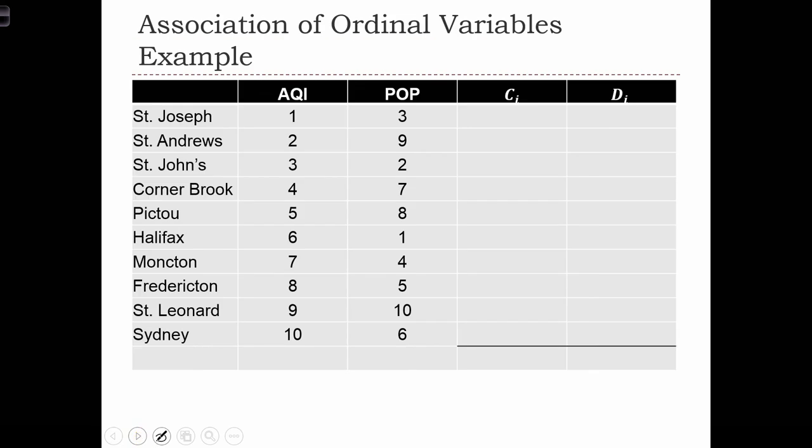Here is a table of AQI and population. I've ranked these cities based on one of the variables, AQI. In order to calculate the number of concordant pairs, what we are going to do is for each observation in this table, look down the population rankings and count how many observations there are that have a higher ranking than the row that you're on.